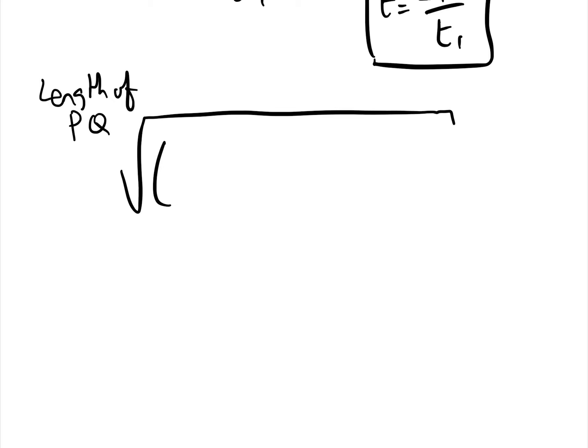Well it's going to equal, by Pythagoras, 2at add 2a over t, squared, add at squared minus a over t squared, squared.